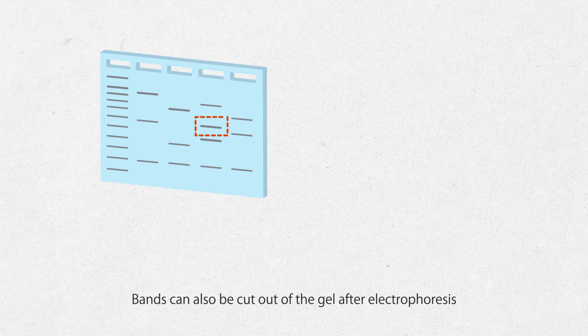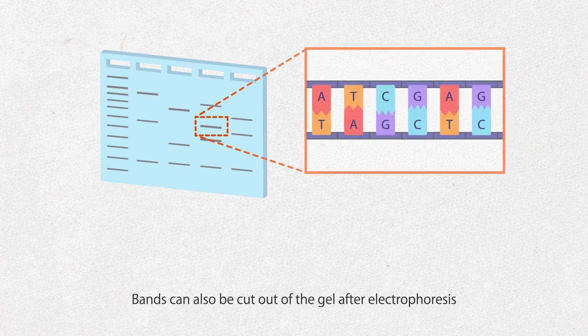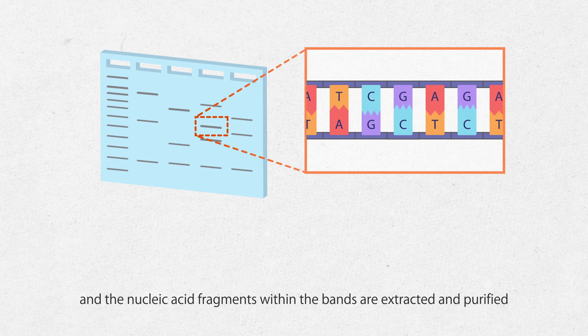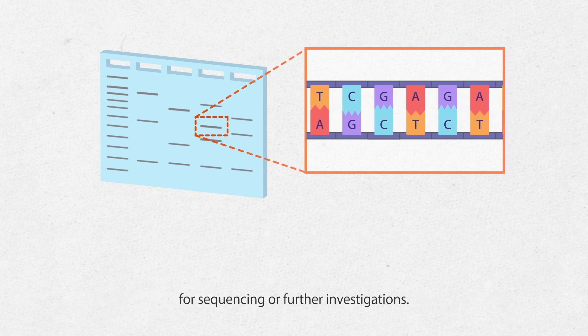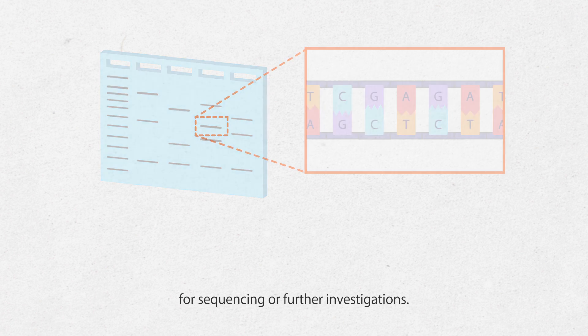Bands can also be cut out of the gel after electrophoresis and then nucleic acid fragments within the bands are extracted and purified for sequencing or further investigations.